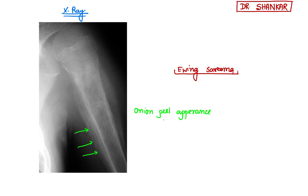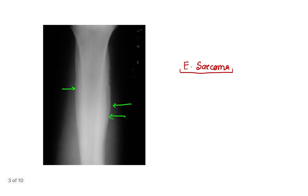What is the reason behind this onion skin appearance? This is seen because of periosteal reaction. Because of periosteal reaction, there is formation of layers of subperiosteal bone, and this causes this layering. That is why this type of X-ray showing onion skin peel appearance is seen in Ewing's sarcoma — because of periosteal reaction resulting in formation of layers of new subperiosteal bone.